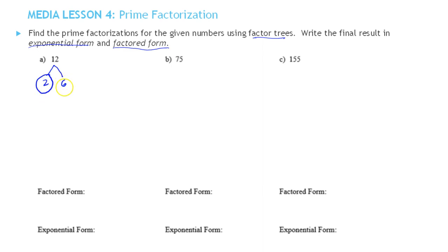When you have a number that's not prime, you're going to keep factoring until you get all primes. So 6 is 2 times 3. Both 2 and 3 are prime, so I'm going to circle them.